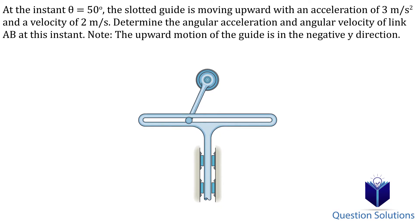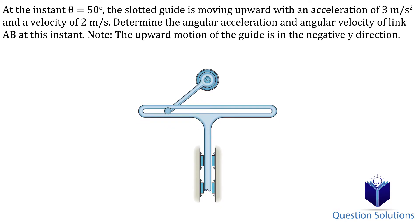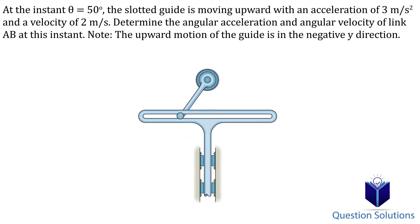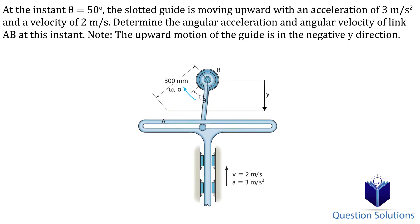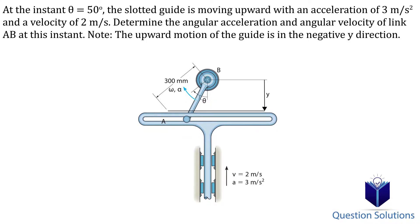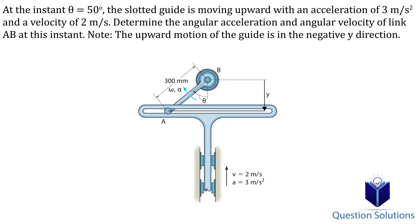Let's take a look at this question and the diagram to understand what's happening. When the link AB is moving along the slot, the slotted guide moves upwards. When the link has moved 50 degrees, the slotted guide has a velocity of 2 meters per second with an acceleration of 3 meters per second squared. The slotted guide moves up and down while the link moves in a circular pattern, so we need to relate the rotational movement of the link to the translational movement of the slotted guide. We can use the length y already marked on the diagram — as the angle changes, length y also changes, so they are related.